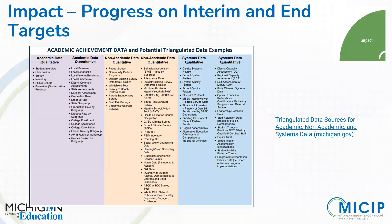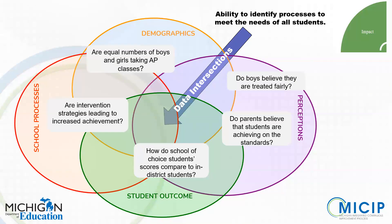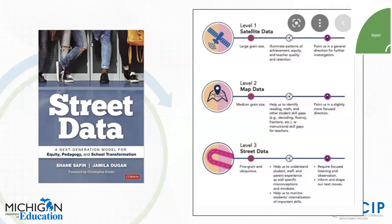Another way to organize data is by the four types of data. You see here some examples of questions that get answered by the four types of data. Is your data story representative of these four types as well? You don't have to have all of them, but at least you should consider whether types you might not have would enrich your data story. We've already talked about the importance of having that perception data — street data — from those who are being impacted by your plan. It's really important to include that in your plan.